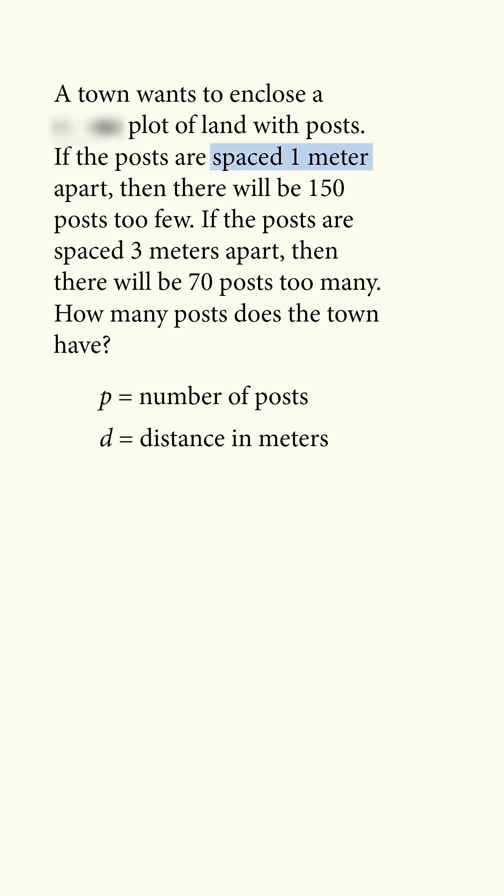If the posts are spaced 1 meter apart, the distance will be p, then there will be 150 posts too few, so that will be equal to d minus 150.